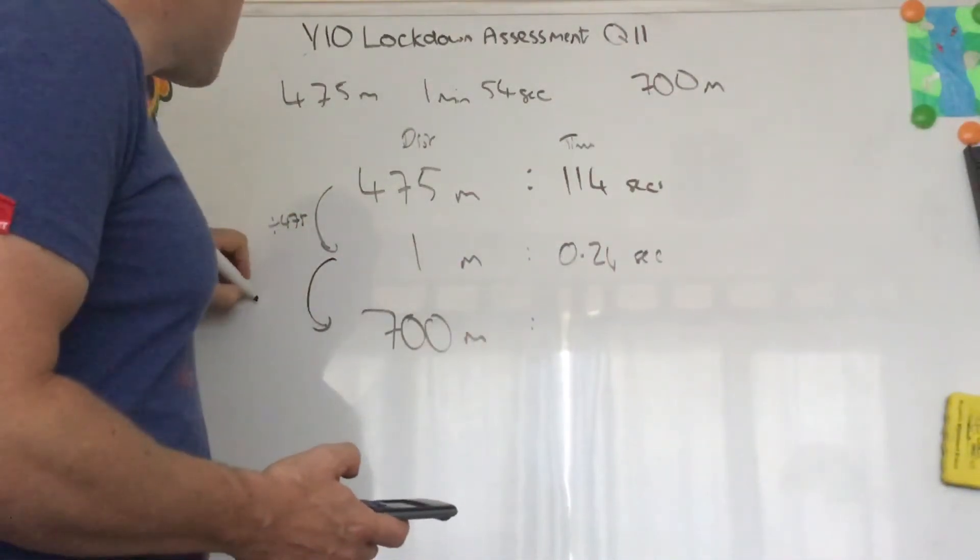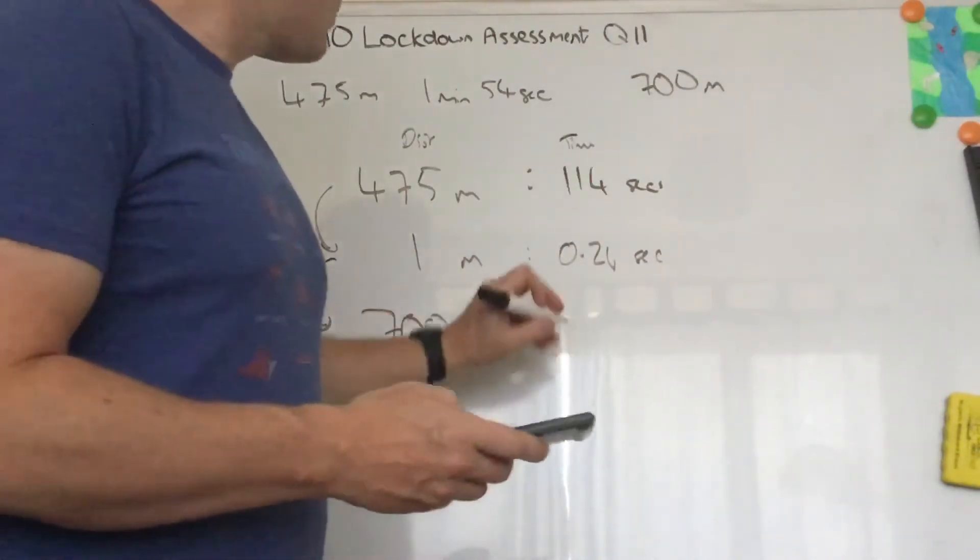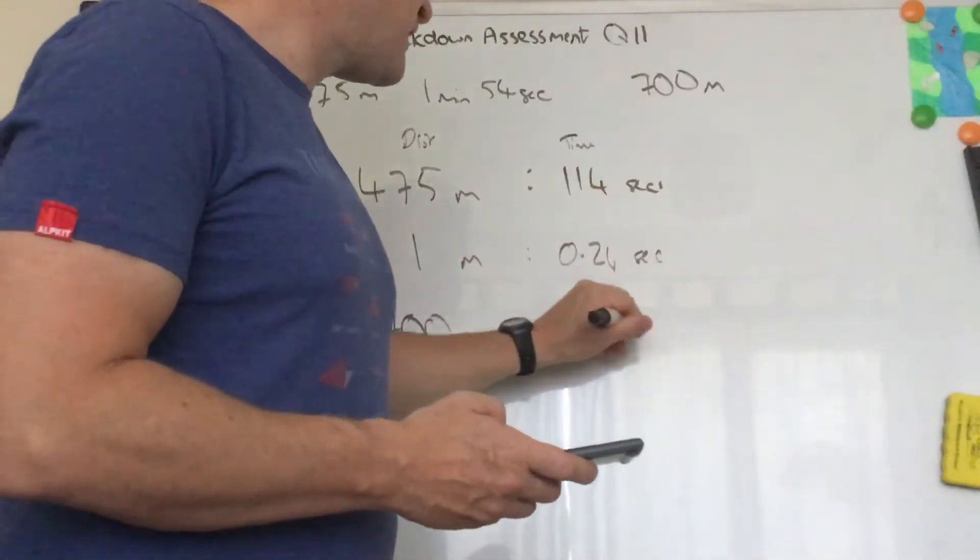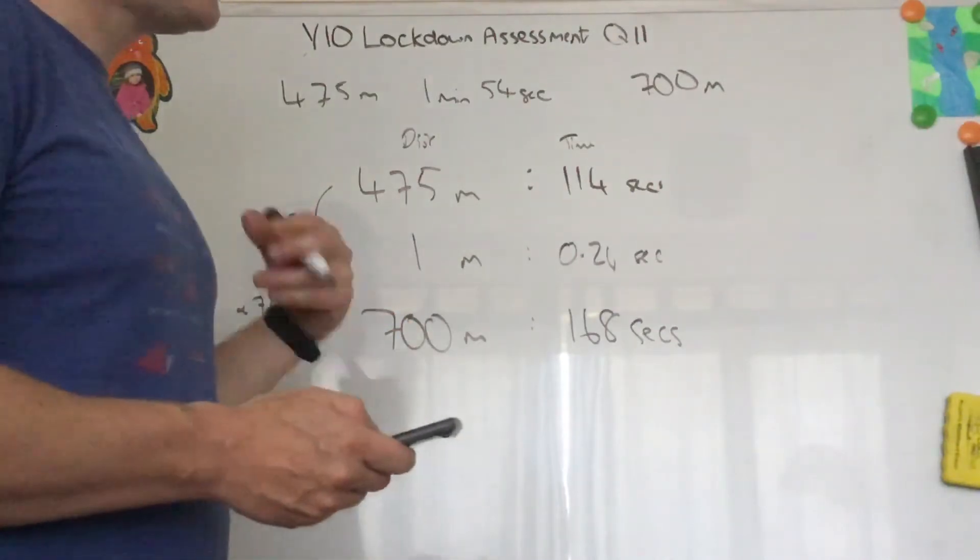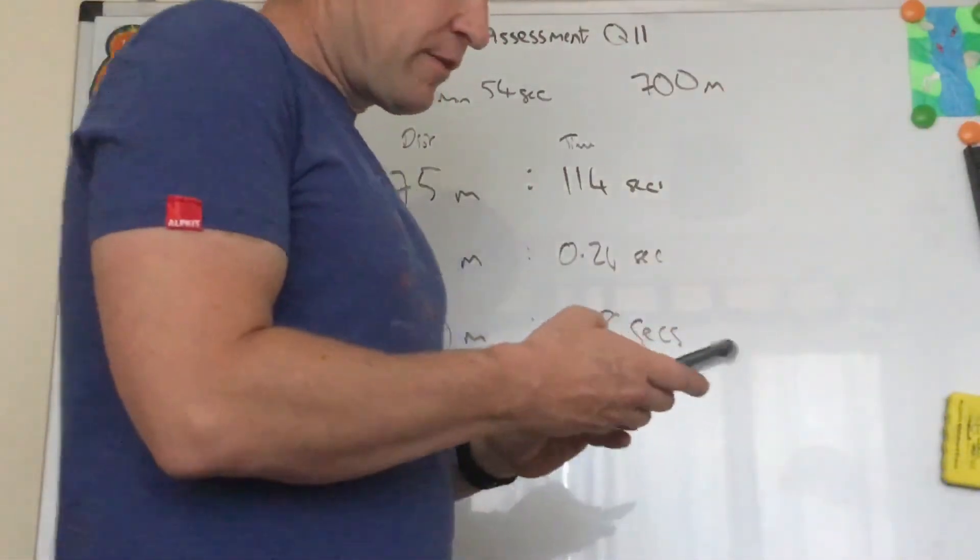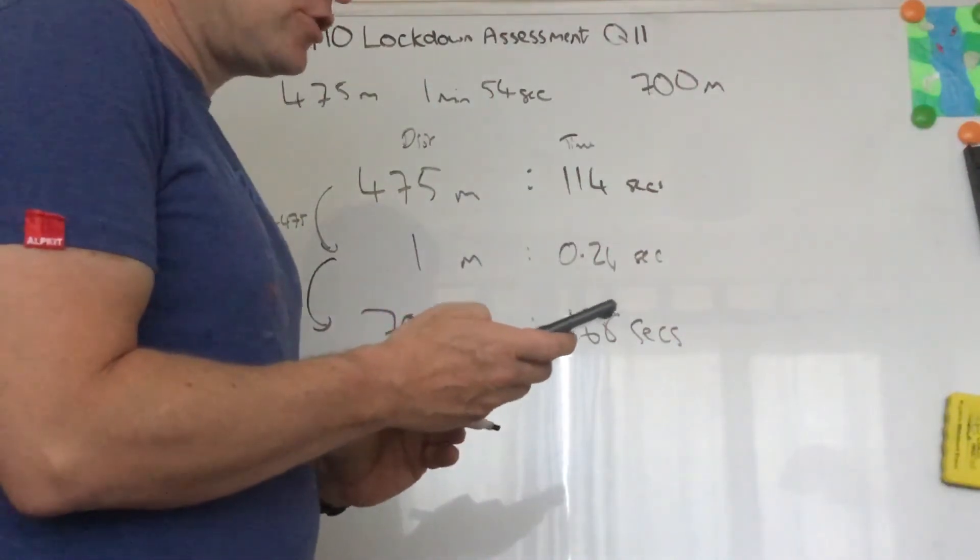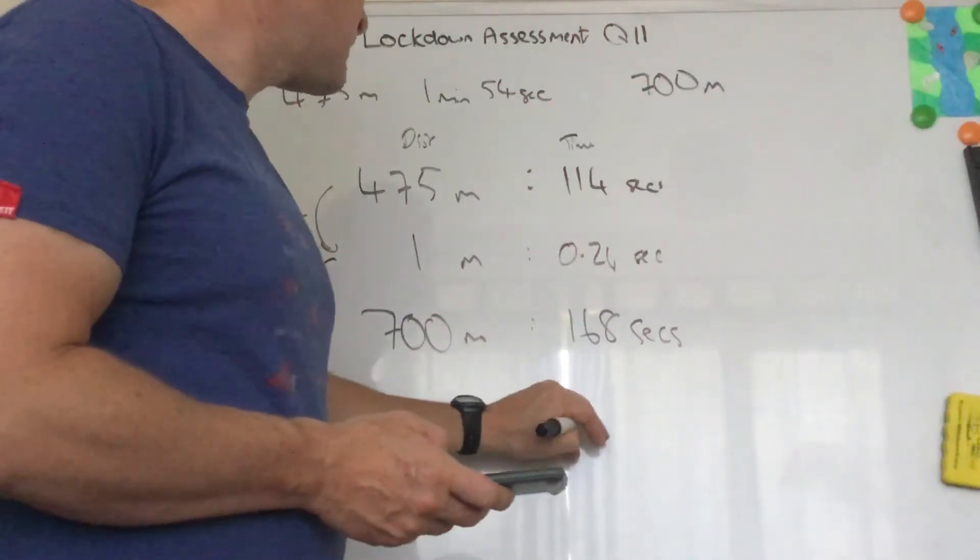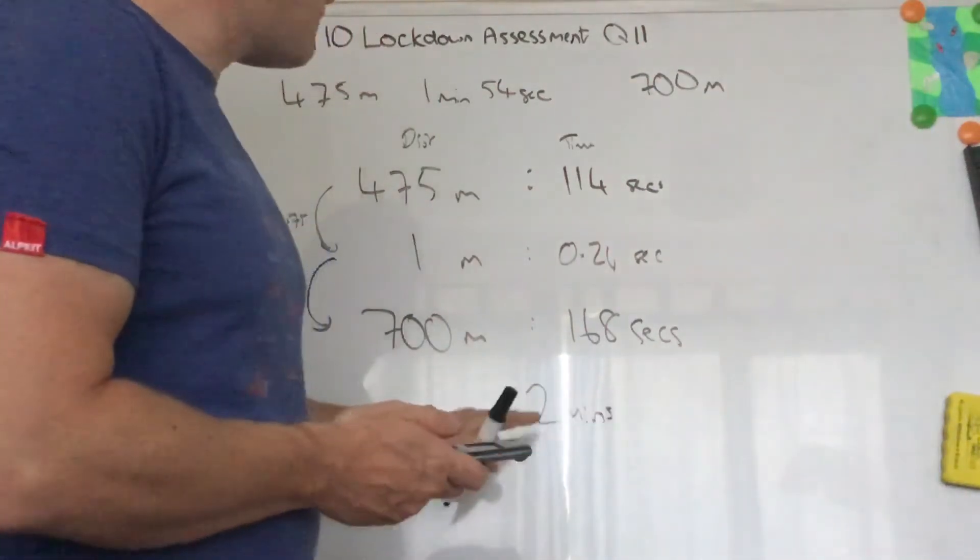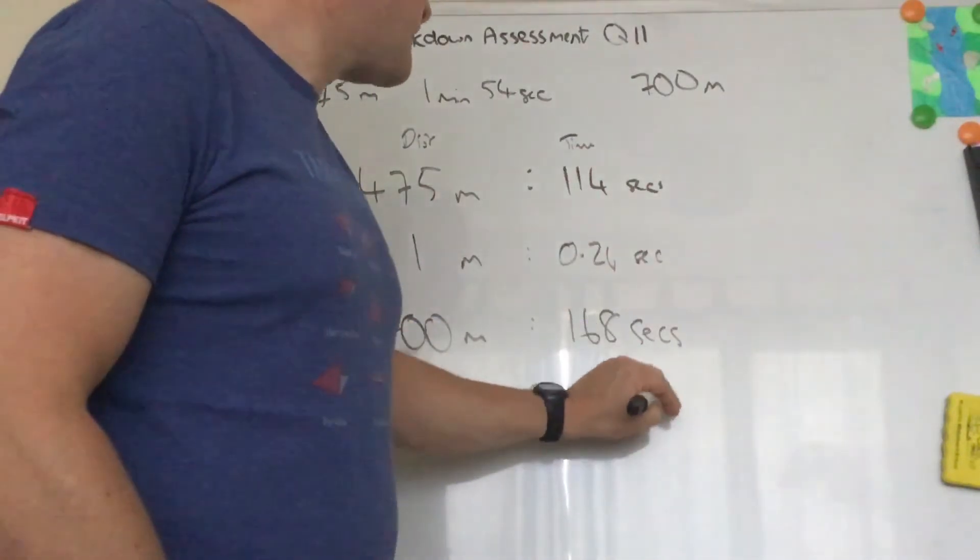So to work out how long it takes to do 700 meters, we times by 700. If we look at it, well yeah, it's two point something minutes. We get 2.8 minutes, so that's two minutes. And rather than focusing on the 0.8 minutes, we'd say well two minutes is 120 seconds, so I've got a remainder of 48 seconds.